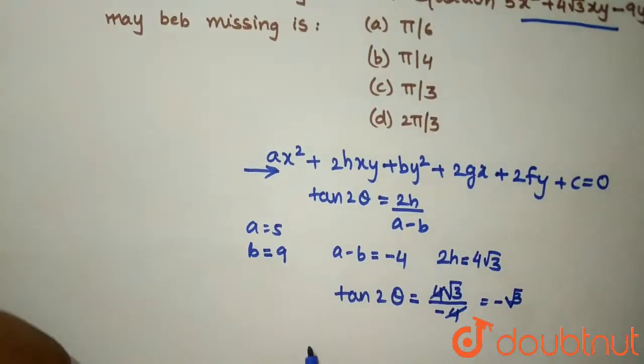Now over here, 2θ will become 2π by 3 taking tan inverse, so your θ will come π by 3.